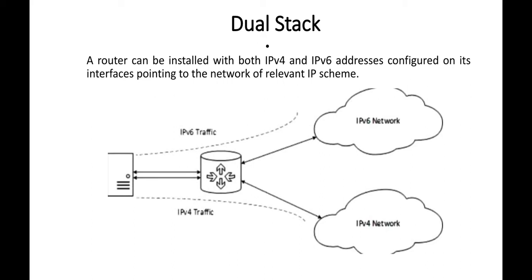For example, when you purchase a laptop, router, or computer, there is an option for both IPv4 and IPv6 — you can enable both. In dual stack mode, both IPv6 and IPv4 are available. It means both versions are supported. Depending on which version you want to communicate through, the dual stack mode uses that version.